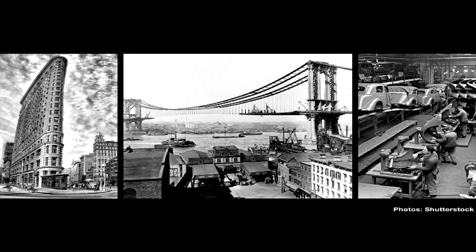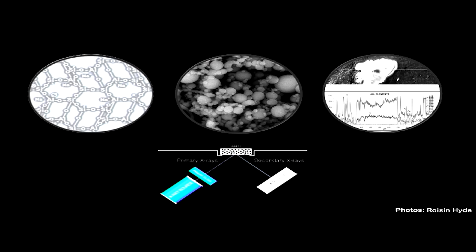Steel revolutionised the machines that we made and the cities we built. We are now on the brink of a fourth Industrial Revolution, a revolution based on digital technology. Technologies such as scanning electron microscopes, energy dispersive X-ray spectroscopy, and X-ray diffraction allow us to analyse the atomic and molecular nanostructures of materials, which predict their strength and chemical performance.